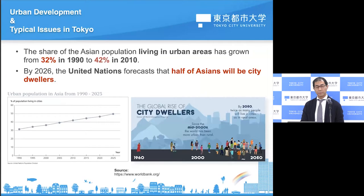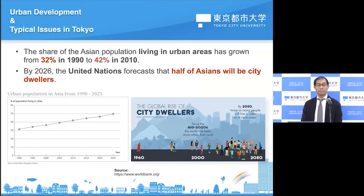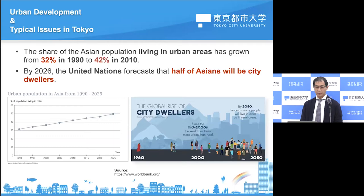First of all, I would like to explain about the trend of population in urban areas. The share of the Asian population living in urban areas has grown from 32% in 1990 to 42% in 2010. According to the United Nations, by 2026, half of Asian people will be city dwellers. This diagram shows the urban population in Asia from 1990 to 2025, gradually increasing over that period.